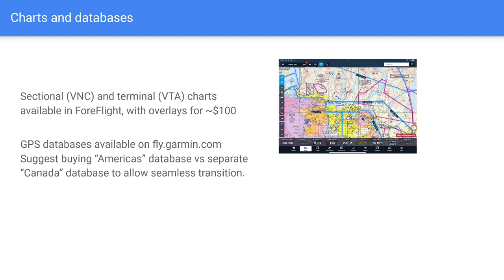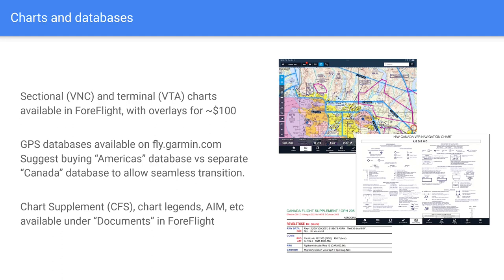We ended up having to navigate without the database on some airplanes, but managed with pilotage and the charts we had — it would have been more of an issue IFR. As part of the ForeFlight subscription, you also get access to legends, which are helpful because some chart symbology is different and difficult to decipher. They also have the Canada Flight Supplement — completely analogous to the US chart supplement — with runway data, communications procedures, and the AIM. I highly recommend subscribing for the duration of your trip.